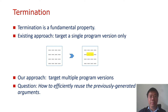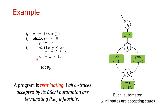Let's look at this simple example which contains a lasso-shaped loop. Following the classical approach for termination analysis, this program can be represented as a Büchi automaton. Each node corresponds to a location of this program, and each edge corresponds to a basic block. This Büchi automaton accepts a set of omega traces. To prove the program is terminating, we need only to show that all omega traces accepted by this Büchi automaton are terminating.